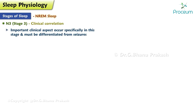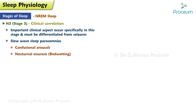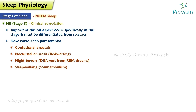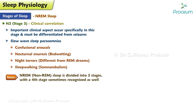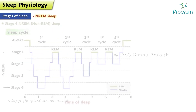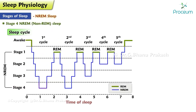Clinical correlation: One important clinical aspect of N3 sleep is that certain sleep disorders occur specifically in this stage and must be differentiated from seizures. These slow wave sleep parasomnias include confusional arousals, nocturnal enuresis (bedwetting), night terrors (different from REM dreams), and sleepwalking (somnambulism). Note that non-rapid eye movement sleep is divided into three stages, with a fourth stage sometimes recognized as well.